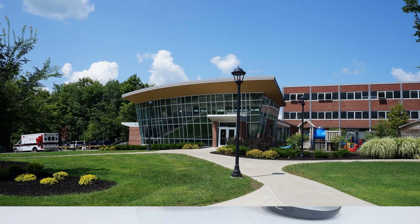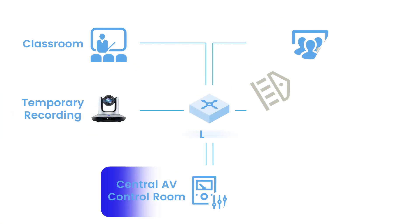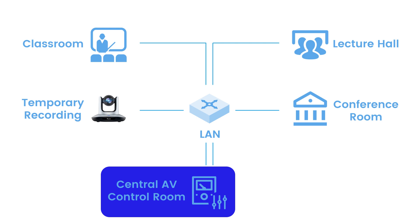A prime use case is a situation where you have a central control room mixing video and audio feeds from several locations in the same building. For example, a school might have a video production control room that can accept feeds from NDI-enabled devices all over the school.